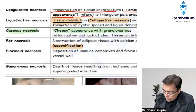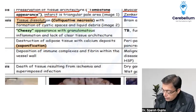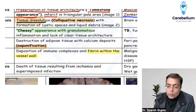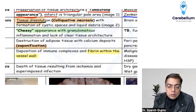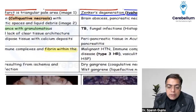When we are talking about fibrinoid necrosis — this was what was asked in the NEET exam — fibrinoid necrosis is characterized by deposition of a fibrin-like substance which is seen within the vessel wall. This fibrin gets deposited within the vessel wall because of deposition of immune complexes.